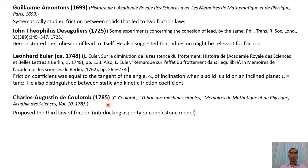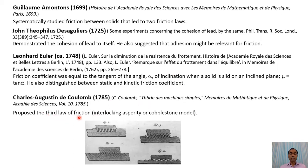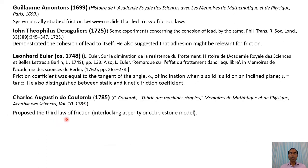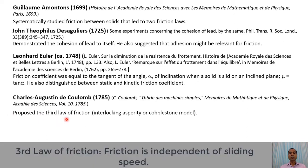In 1785, Coulomb gave another law, now known as the third law of friction. He proposed that friction results from interlocking asperities — also known as the cobblestone model. When two surfaces slide against each other, the asperities interlock and interact elastically, producing friction. According to this model, friction is independent of sliding speed. This is known as the third law of friction or Coulomb's law.